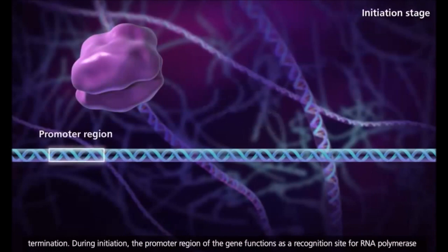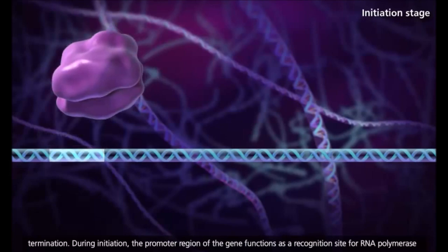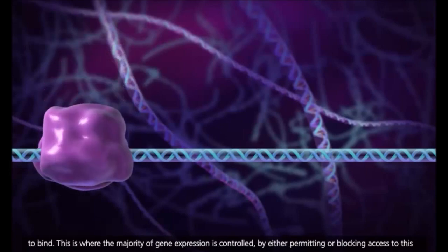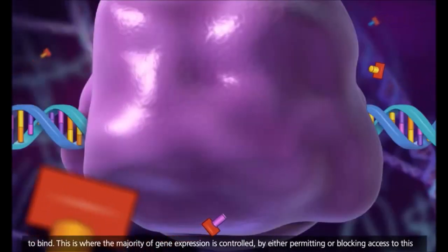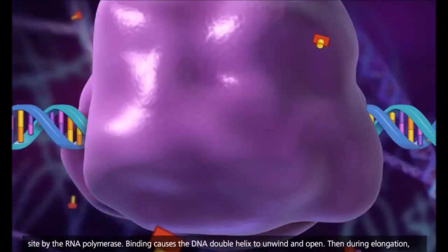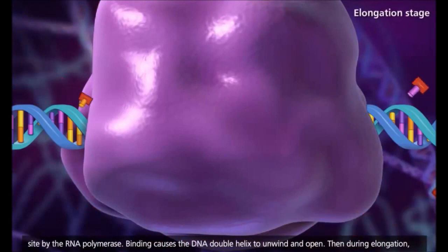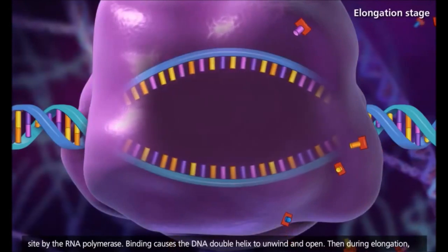During initiation, the promoter region of the gene functions as a recognition site for RNA polymerase to bind. This is where the majority of gene expression is controlled, by either permitting or blocking access to this site by the RNA polymerase. Binding causes the DNA double helix to unwind and open.